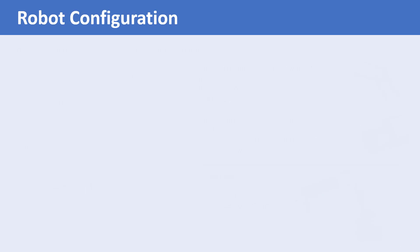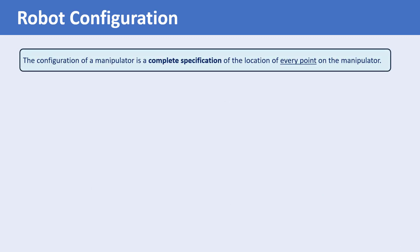The configuration of a robot manipulator is a complete specification of the location of every point on the manipulator. For rigid robots, which are robots with rigid links and joints, if the values of the joint variables — which are joint angles for revolute joints and joint offsets for prismatic joints — are known, then the position of every point on the manipulator can be found.